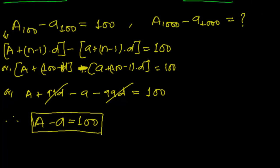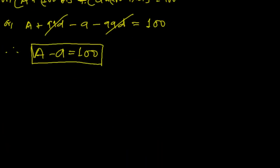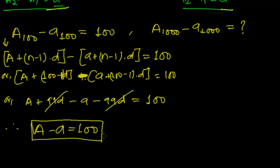The difference between the first terms will hold throughout the series, since the common difference between the two series is the same. If the difference between the first terms is 100, then the difference between the second terms is also 100, the third terms also 100, the fiftieth term also 100, the ten-thousandth term also 100 — any term's difference will always be constant.